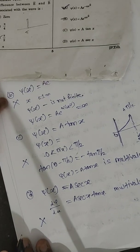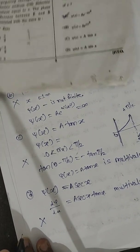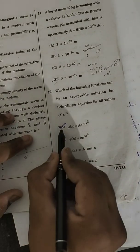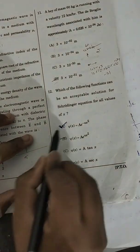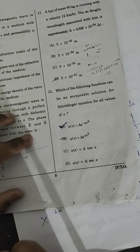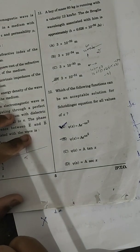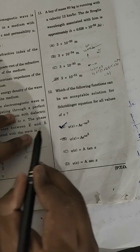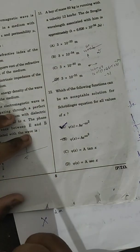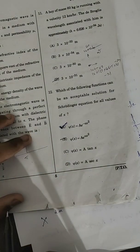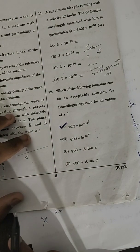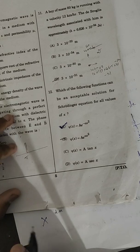So we can directly conclude that option A — psi equals A e to the power minus alpha x squared — satisfies all properties of an acceptable wave function. That is our answer. If you like our video, please share it. Thank you.